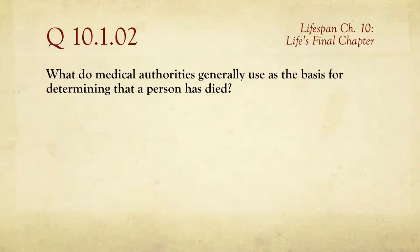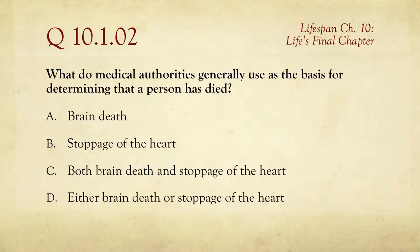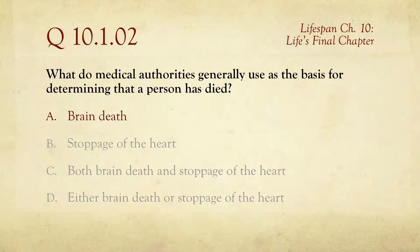Question number two: what do medical authorities generally use as the basis for determining that a person has died? Interestingly, there is some gray area in this. The choices are brain death, stoppage of the heart, both brain death and stoppage of the heart, or either brain death or stoppage of the heart. The interesting thing is you can basically keep a person's heart beating forever with enough machinery. So the general criterion is not the heart but brain death — when you no longer have any organized electrical brain activity. You can't fix that, and so that is generally regarded as being dead.